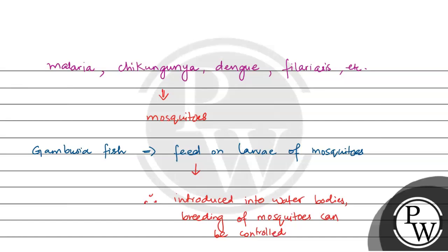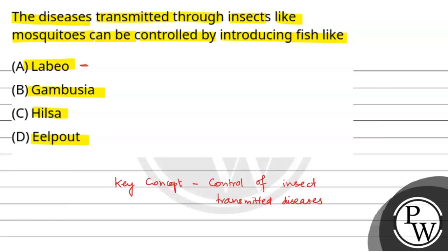Coming back to the question: the first option, Labio, is not used; Gambusia is used. Hilsa is also not used. Labio and Hilsa are both used for eating purposes as a food source. Eel powder is also not used. So the final answer is option B. Hope you understood well. Best of luck.